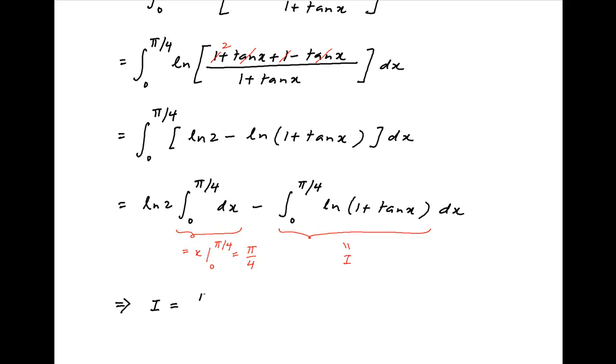We therefore get I equals π/4 times ln 2 minus I, or in other words 2I equals π/4 ln 2.